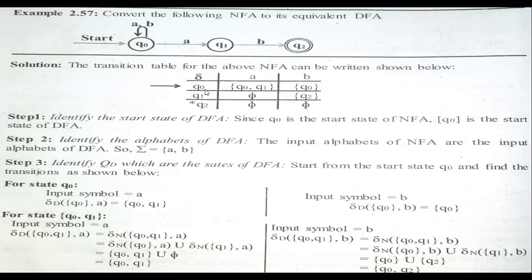Now converting: Step 1 — since Q0 is the start state of NFA, Q0 is the start state of DFA. Step 2 — the alphabets are a and b, so sigma = {a, b} for DFA also. Step 3 — we identify the transition for DFA. Right now we only know one state: Q0.